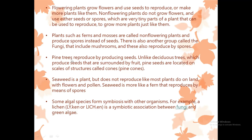Pine trees reproduce by producing seeds, but they are not flowering plants. Unlike deciduous trees which produce seeds surrounded by fruit, pine seeds are located on scales of structures called cones. Seaweed is a plant but reproduces like a fern — by means of spores, not seeds. Some algal species form symbiotic relationships with other organisms; for example, lichen is a symbiotic association between fungus and green algae, where fungi provide a structure and algae provide food.